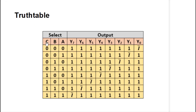With C as the most significant and A as the least significant, when all are 000, all terminals will become one except Y0. Y0 will follow the negation of the input — I bar means if input is zero, output becomes one; if input is one, output becomes zero. With 001, we get the output at Y1. You can see this diagonally follows the input pattern. So we will verify this truth table for the demultiplexer also.